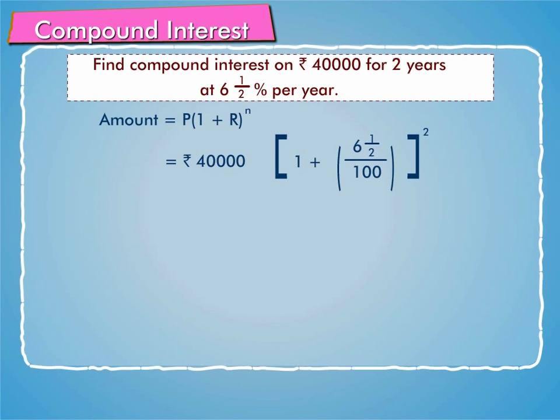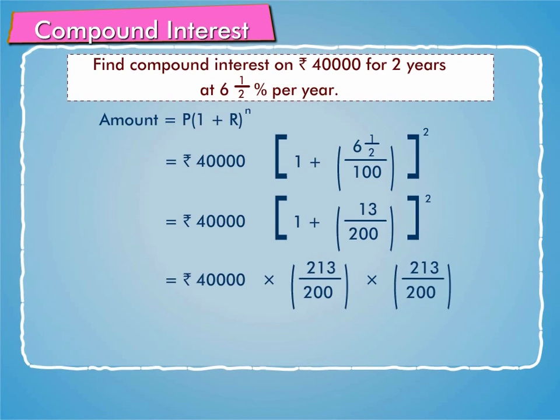We get amount is equal to rupees 40,000 into 1 plus 6 and a half by 100 whole square, which is equal to rupees 40,000 into 213 by 200 into 213 by 200, which is equal to rupees 45,369.